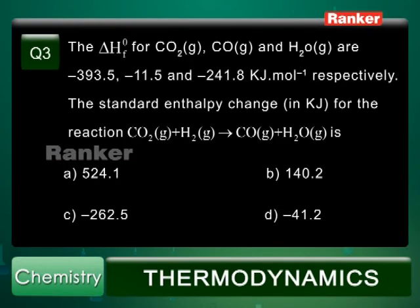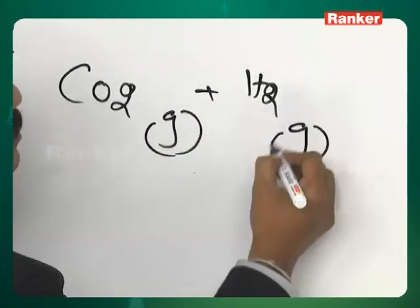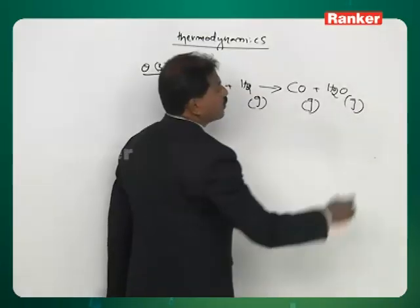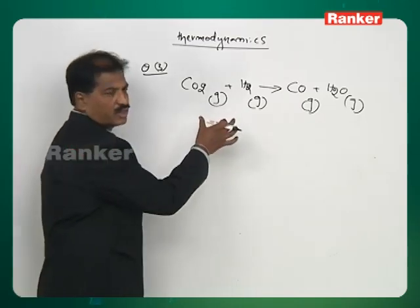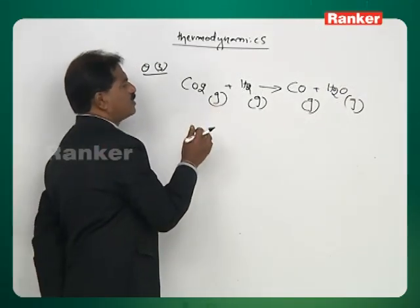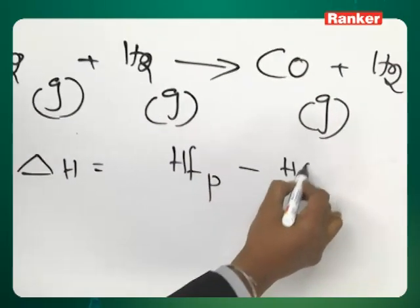Question number 3. The heat of formation of CO2 gas, CO gas and H2O gas are minus 393.5, minus 11.5, and minus 241.8 kilojoules per mole respectively. The standard enthalpy change for the reaction CO2(g) + H2(g) → CO(g) + H2O(g) is asked. When enthalpies of formation of reactants and products are given, the formula is: enthalpy of formation of products minus enthalpy of formation of reactants.